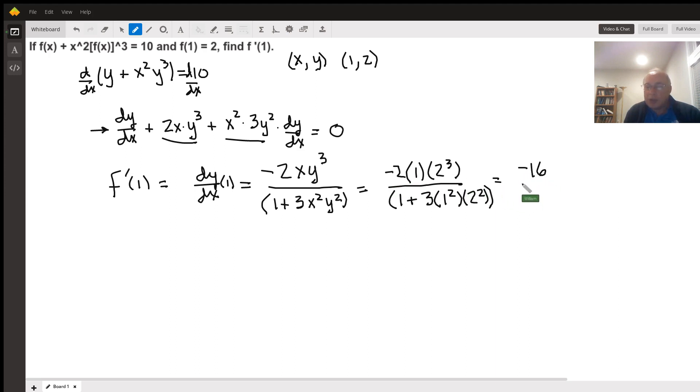16 with negative 16 and then 1 plus 3 times 4 is 12 plus 1 is 13. So the value of the derivative at 1 is negative 16 over 13.